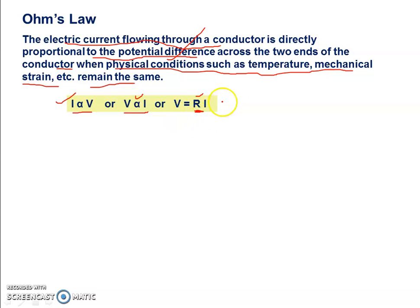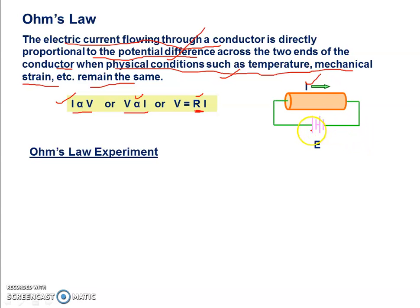This law is valid only when all physical conditions remain constant. Now, this is a conductor — a cylindrical metallic wire. We apply a battery. The battery creates a potential difference between the two ends of the conductor. If there is one cell, the potential difference is 1.5 volt. If you have two cells in series, it will be 3 volt. If you have three cells, then 4.5 volt.